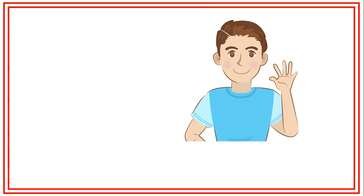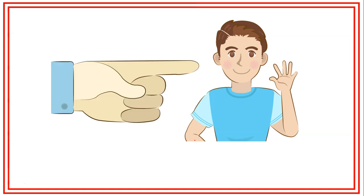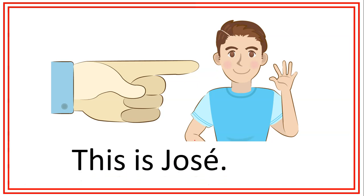La palabra this también puede servir para identificar personas. Por ejemplo, this is José. Esto es curioso porque si traducimos literal la oración, diría este es José. Normalmente no vamos por la vida presentando así a las personas. Pero hay que entender que cuando estudiamos un segundo idioma, las maneras de dirigirse a las personas cambian. Cuando queramos presentar a una persona, vamos a utilizar this, aunque su traducción literal suene un poco extraña.